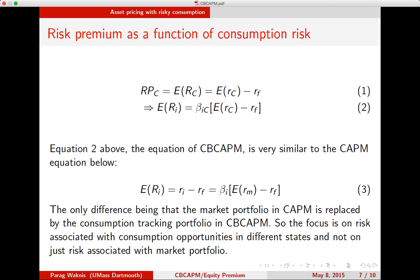Equation 2 is basically the equation of the consumption-based capital asset pricing model, and you can see that it is very similar to the CAPM equation we saw before. For CAPM, the expected excess return was a function of the expected excess return on the market portfolio and how the asset is related to that portfolio. The only difference here is that the market portfolio in CAPM is replaced by the consumption tracking portfolio in CBCAPM. Here the focus is on risk associated with consumption opportunities in different states, and not just risk associated with the market portfolio. This happens because the optimal savings problem has a particular objective: to ensure against shocks to consumption.